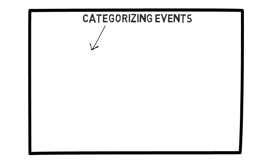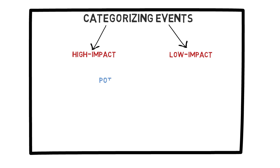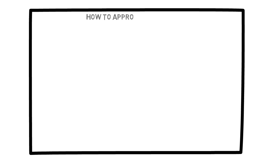So far we have discussed the concept of categorizing decisions and events based on whether they are high impact or low impact ones. We did this by looking at the potential harm caused by a decision or an event. In this video, I would like to talk about how we can approach a low stakes decision, which we can identify based on the relatively low amount of harm it could cause.